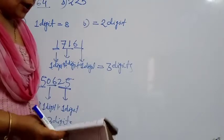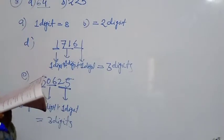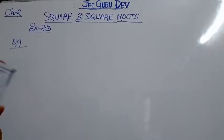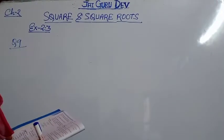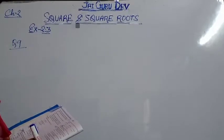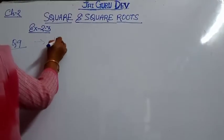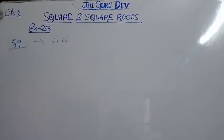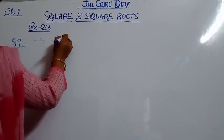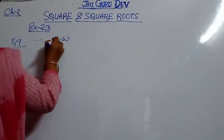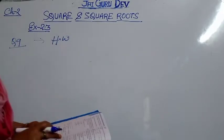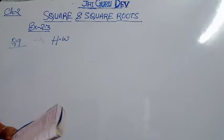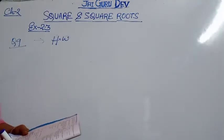Now come to question number 9: The side of a square field is 73 metres — what is the area? I am not doing this question. Everybody already knows the formula: area of a square equals side times side. You will find the area using the given side length.